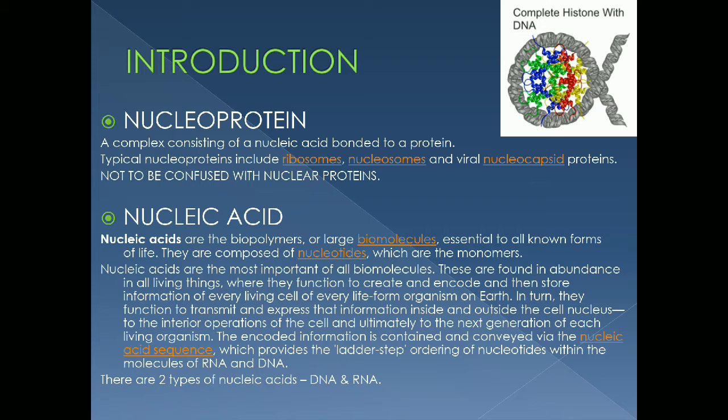Nucleic acids are long-chain biopolymers made up of monomeric units known as nucleotides, so they are polynucleotides. We have two types of nucleic acids: DNA and RNA. DNA stores all the hereditary information of a biological species — it determines the nature of a cell and controls the growth and division of the cell. Now, what is the composition of these nucleic acids?